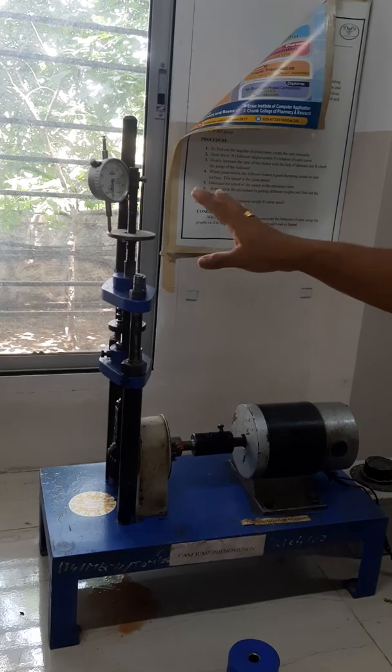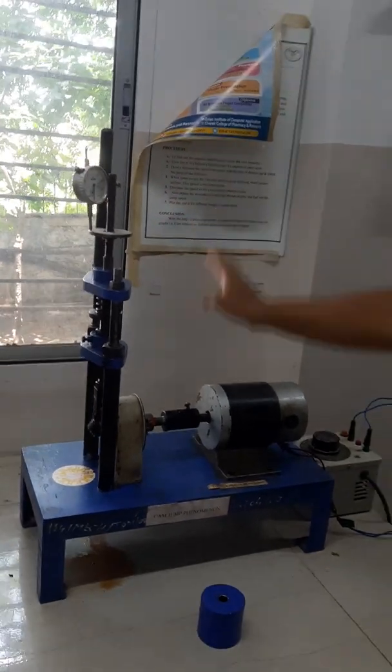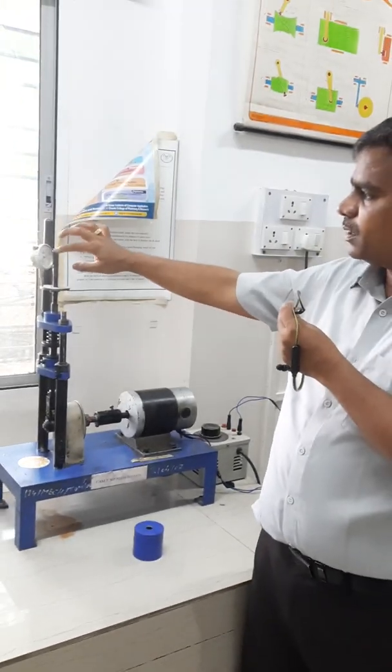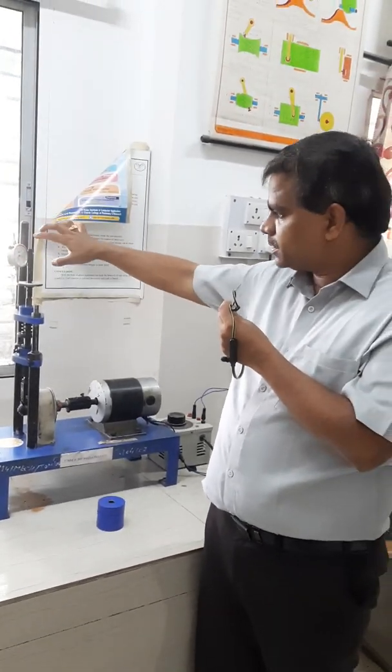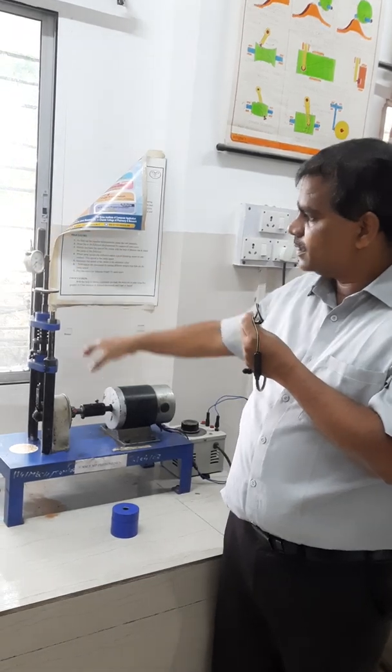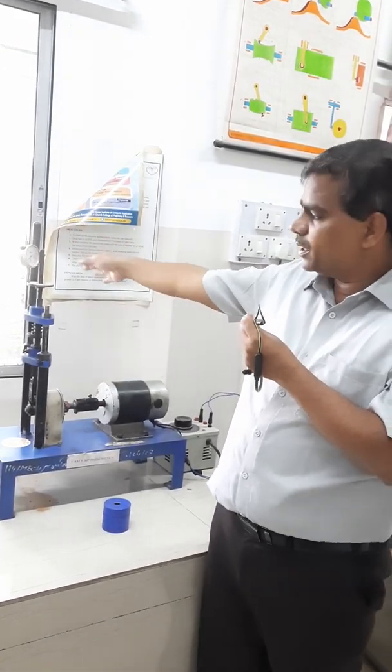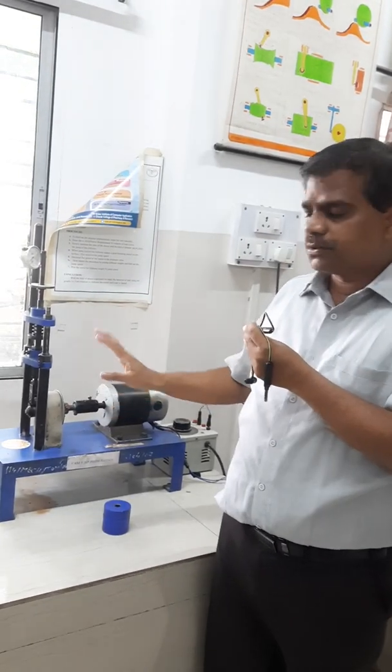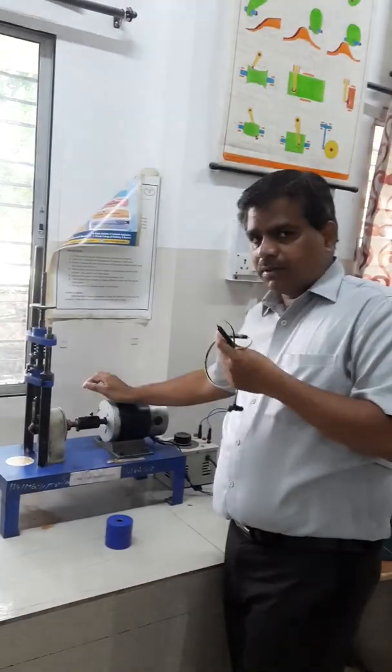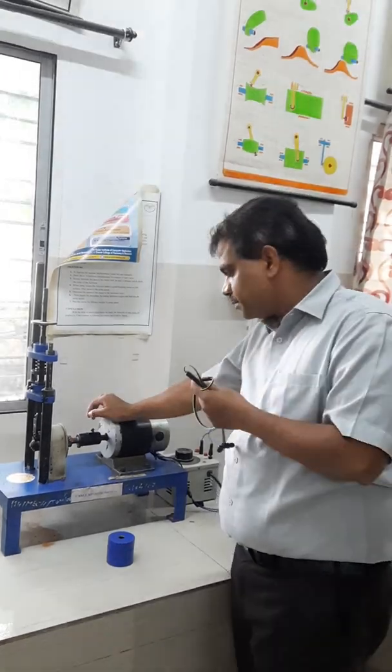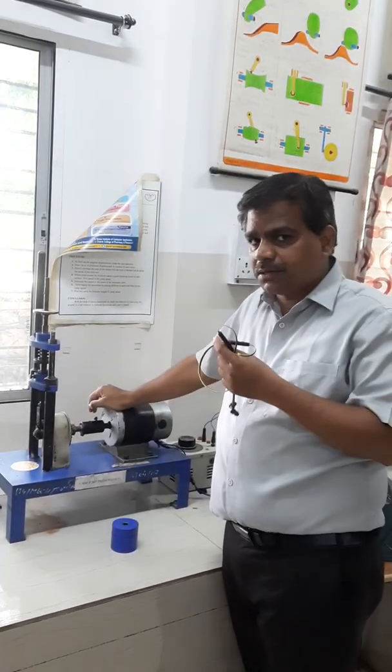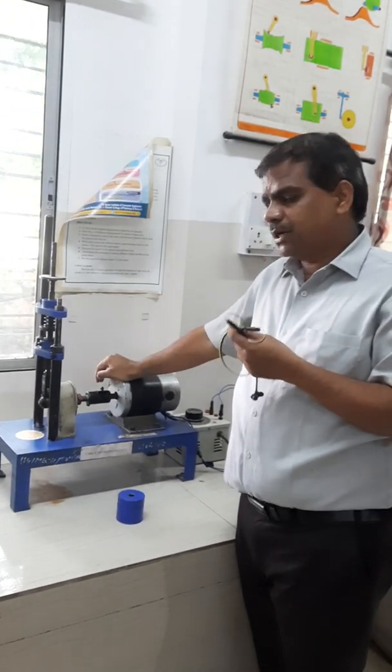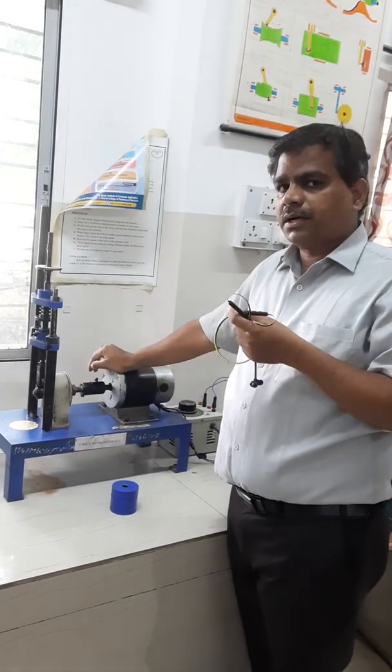So like this, this is one part. I will be showing you the detail readings later. For the time being, we will only understand that like this we will be finding the profile of the cam. This is one part. Now coming to the next part of the experiment, that is the cam jump.